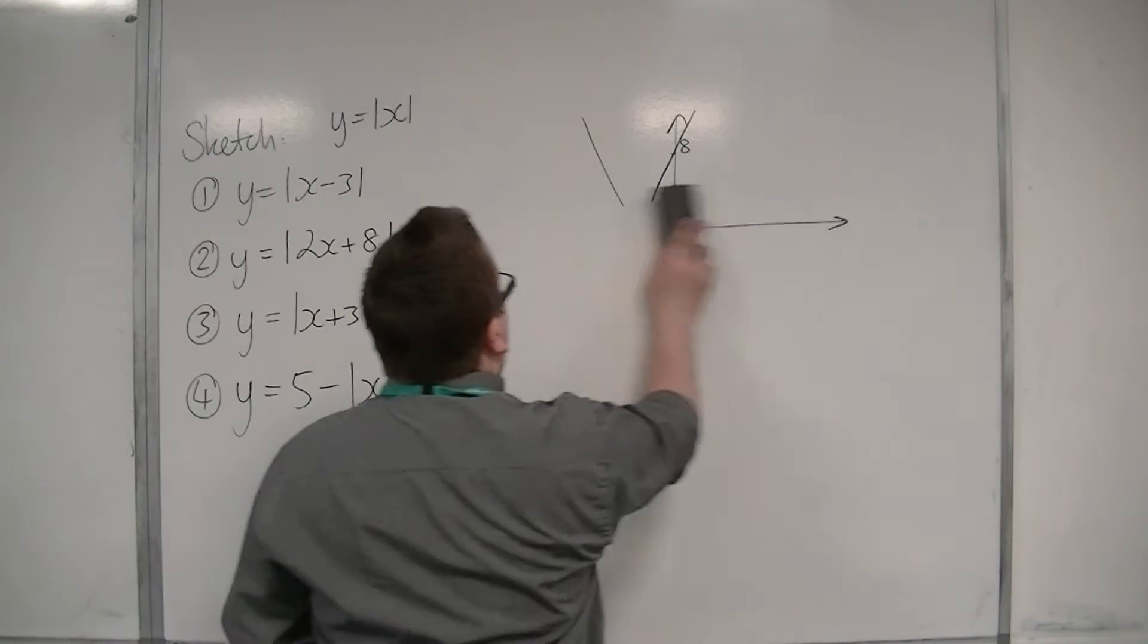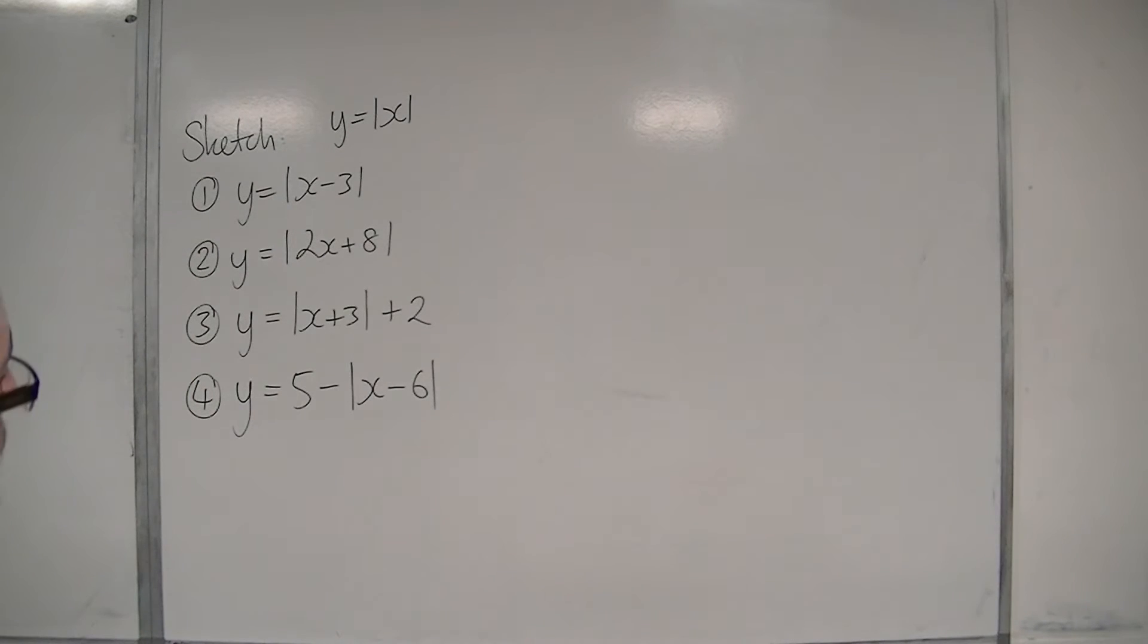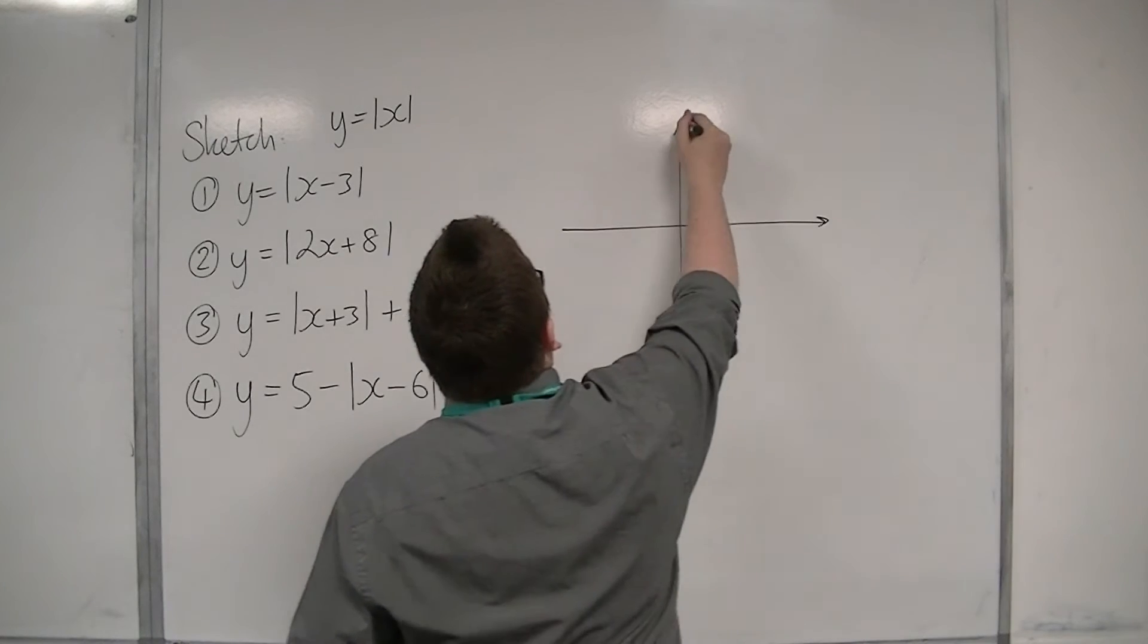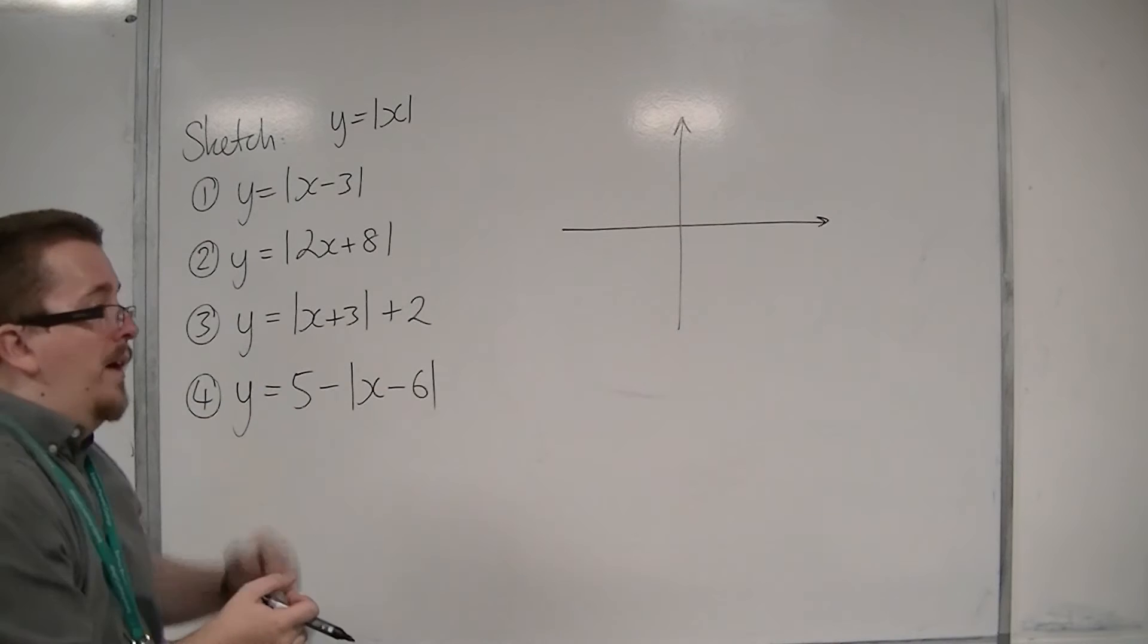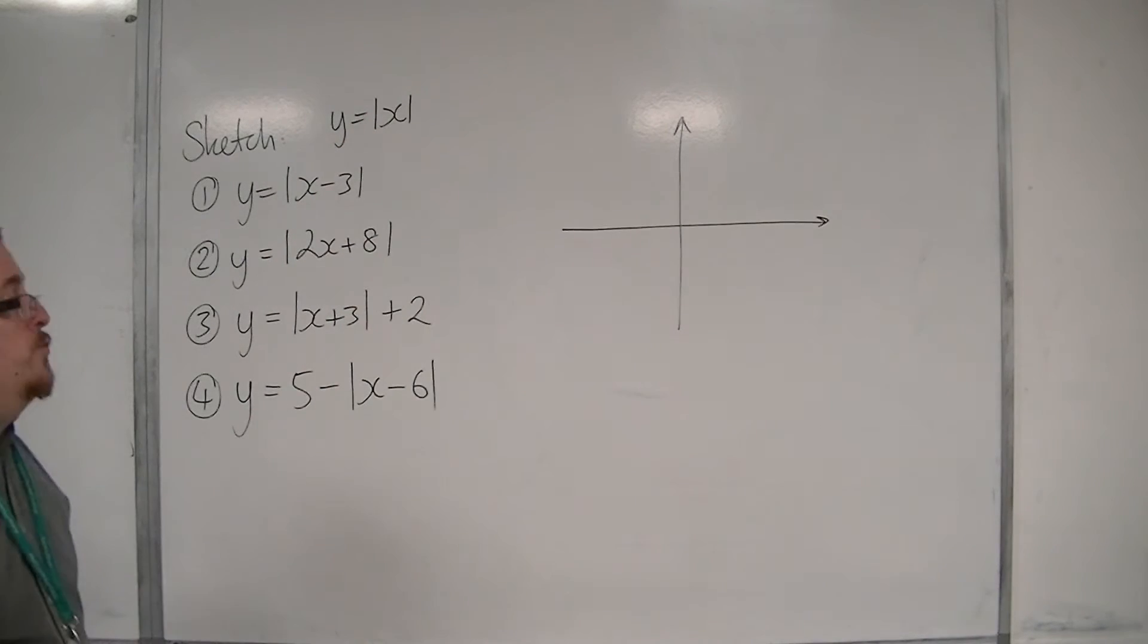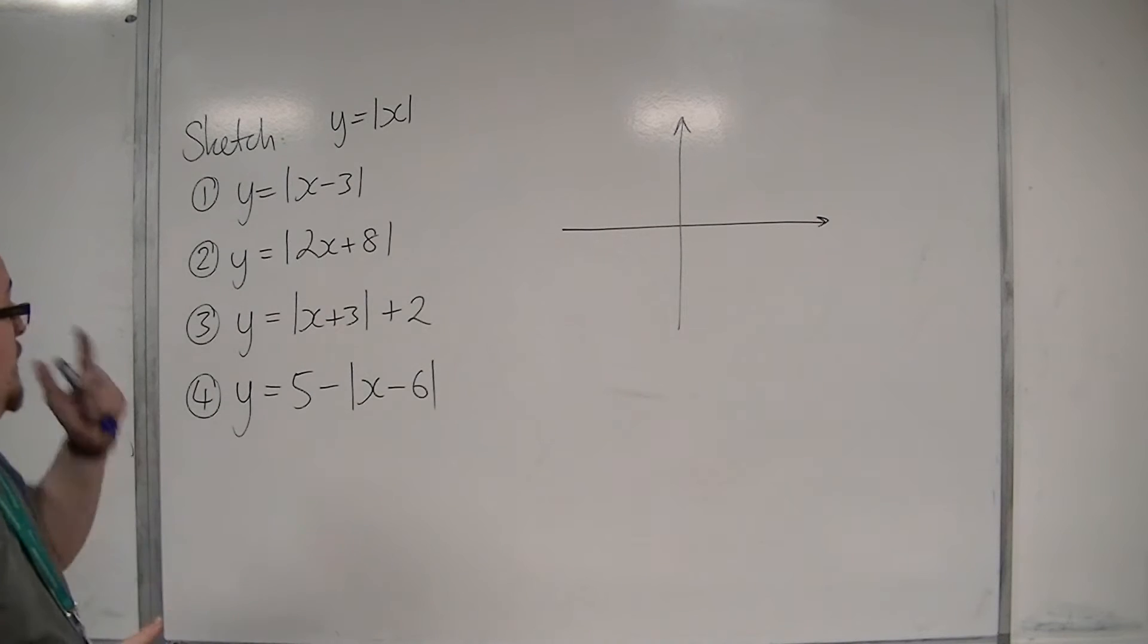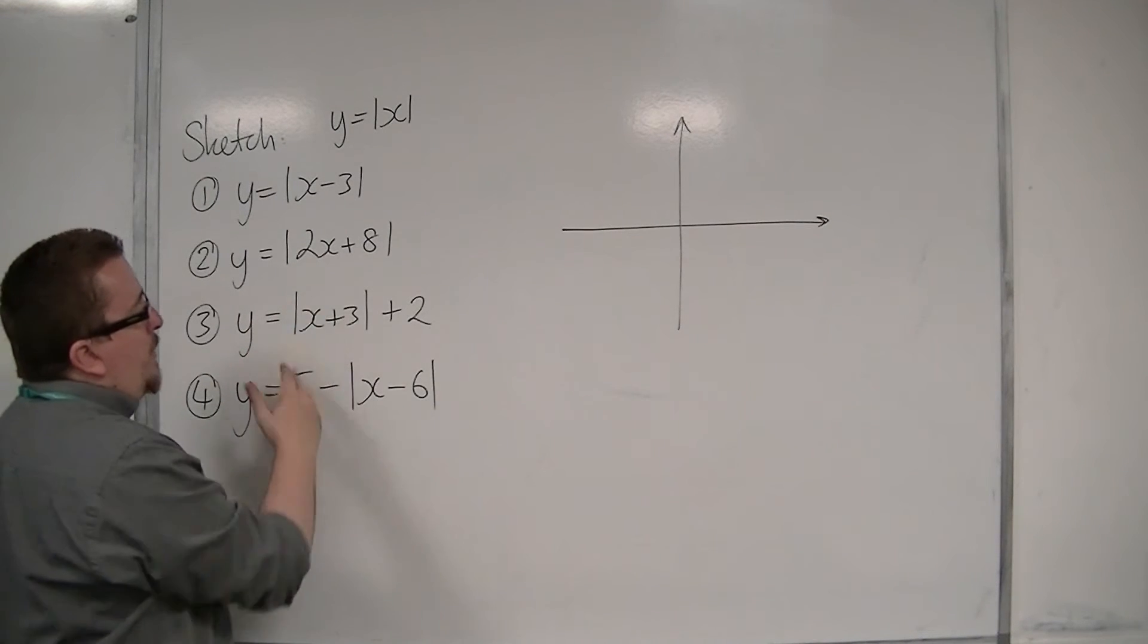Let's have a look at the next one: y equals mod x plus 3 plus 2. Now we should start to see that we can use our graph transformations knowledge as well, because this would be a translation by the vector of the original modulus graph. But we can also use our techniques from before. So when x is zero, we get modulus of three plus two, so that's five.